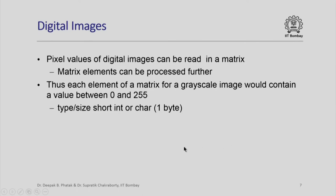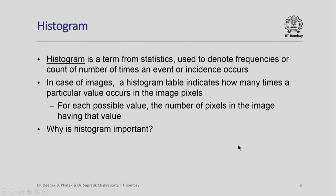We will concentrate on looking at the pixel values of a digital image, assuming that these pixel values can be read inside a matrix. The matrix elements can then be processed further. Each element of a matrix for a grayscale image, for example, would contain a value between 0 and 255, where 0 is black and 255 is white. It does not require more than one short int or one char — which is one byte — to store a pixel. We now assume that we can read all the pixel values into a matrix and see how they can be processed.